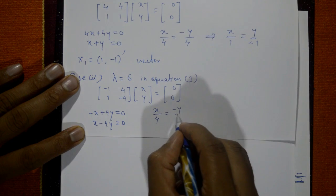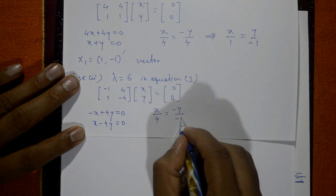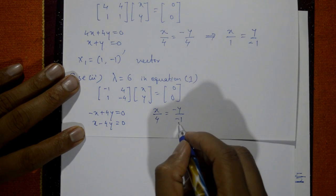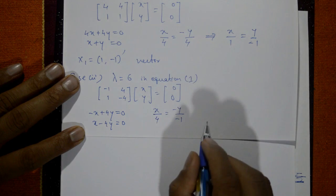Taking any one equation: x = 4y, so x/4 = y/1, meaning x by 4 equals y by 1.